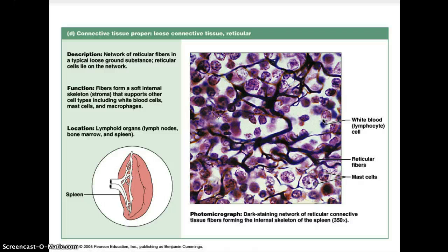Loose connective reticular tissue contains white blood lymphocyte cells, reticular fibers, and mast cells. It is a network of reticular fibers in a typical loose ground substance where reticular cells lie on the network. The fibers form a soft internal skeleton that supports other cell types, including white blood cells, mast cells, and macrophages. Its location includes lymphoid organs such as lymph nodes, bone marrow, and the spleen.